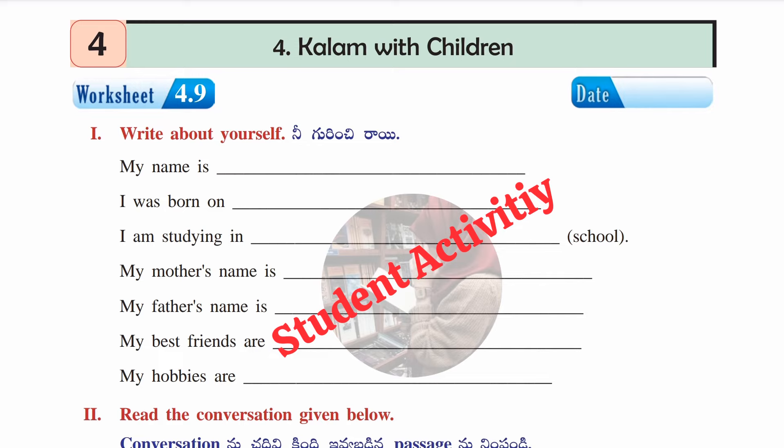Worksheet 4.9, first section: write about yourself — it is like your own bio data. This is a student activity. You have to write your name, when you were born, which class and school you are studying in, your father's name, mother's name, best friend's name, and your hobbies.